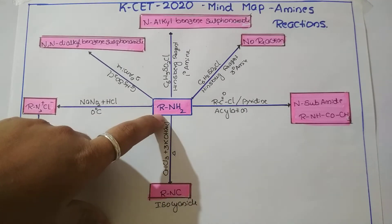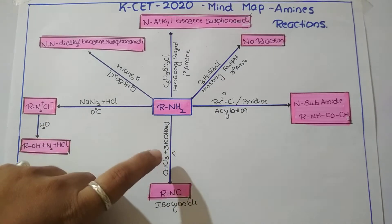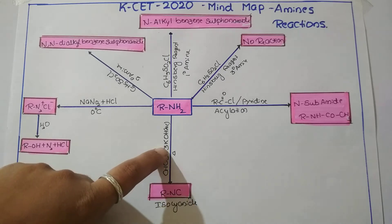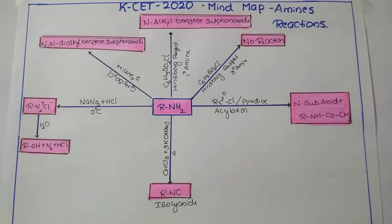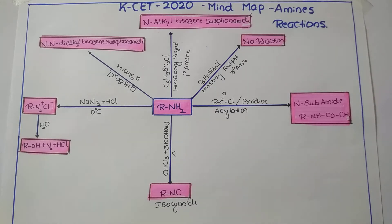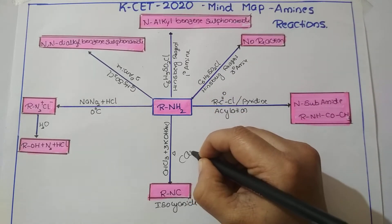The next reaction is very important. When amine is treated with a mixture of chloroform followed by excess of alcoholic potassium hydroxide and heated, a bad smell is produced. That bad smell is due to the formation of an alkyl isocyanide. This reaction is used to distinguish between primary, secondary, and tertiary amines, as well as between aliphatic and aromatic amines. The name of the reaction is the carbylamine reaction.